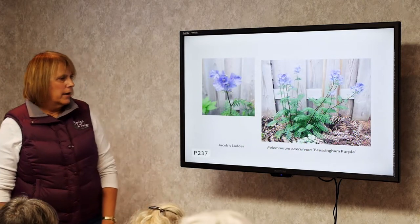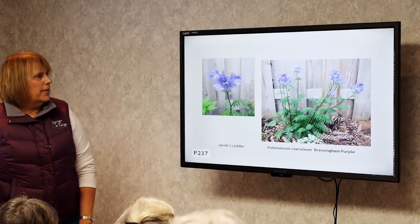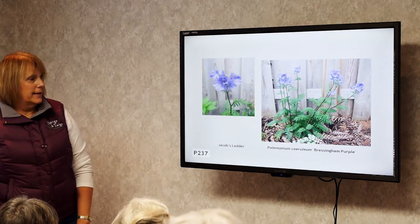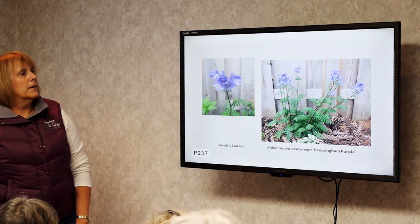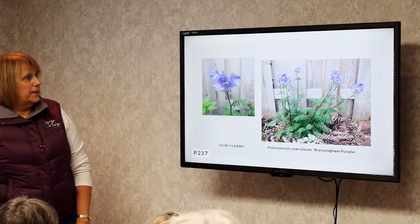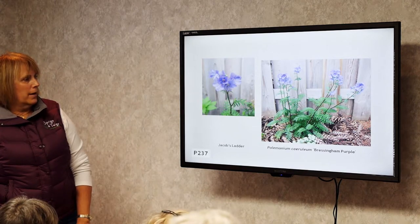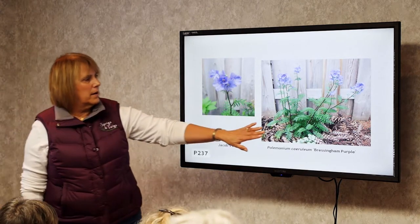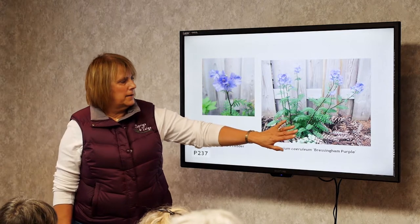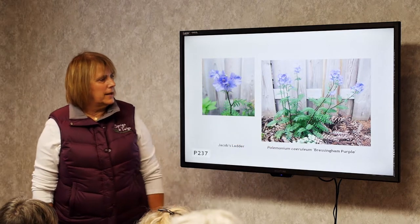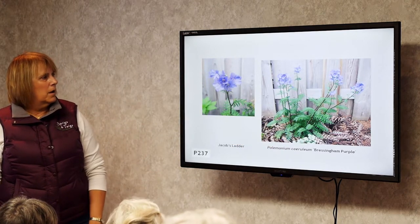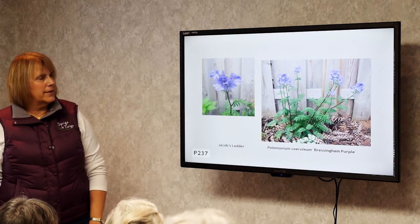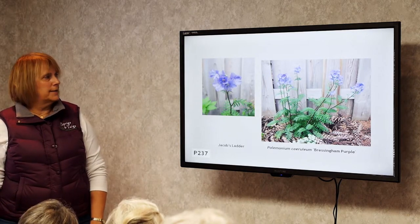Jacob's Ladder. This is a shade plant that likes a little bit of moisture. It has a bluish-purple flower, and sometimes the leaves are variegated with some cultivars. A very nice plant for moist shade.